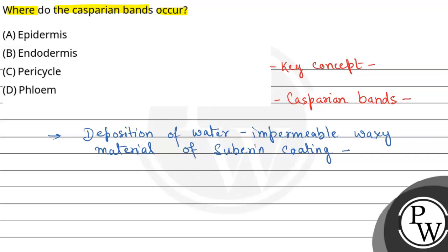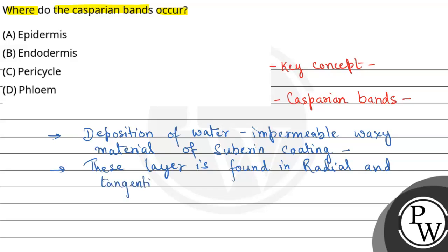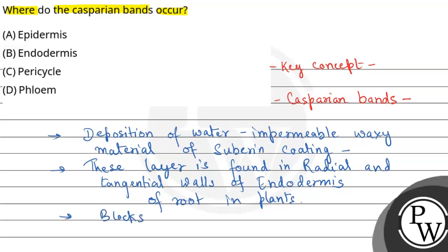So, this suberin coating is a layer found in radial and tangential walls of endodermis of roots in plants. These Casparian bands are present in the radial and tangential walls of endodermal cells in roots of plants. And their function is — it blocks the water inflow. Yeh water inflow ko block karte hai.